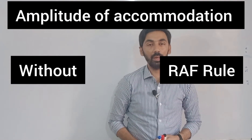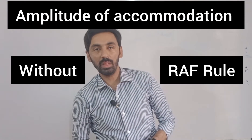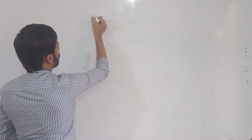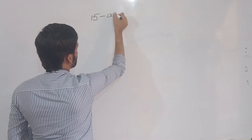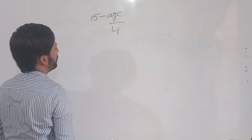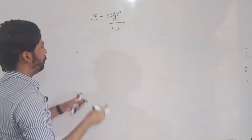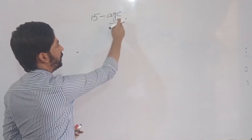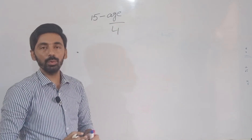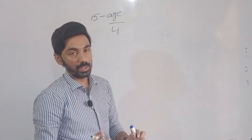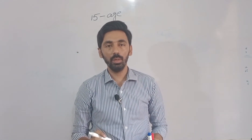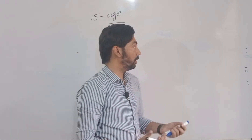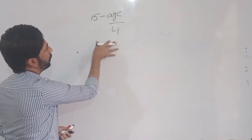In this video we will discuss how we can find the amplitude of accommodation without any help of the RF rule. The simple formula is 15 minus age over 4. With this formula we can find the amplitude of accommodation at any age — simply put in the age to get the result. The RF rule is the most accurate instrument, but if you don't have one, you can use this formula.